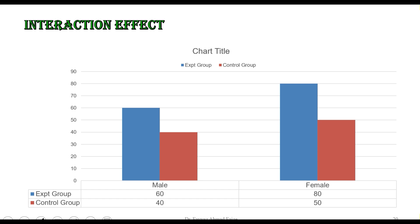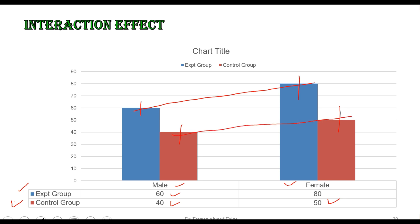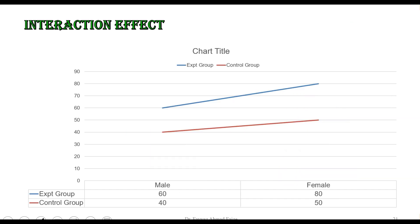Now let's look at an example with two factors: gender (male and female) and group (experimental and control). The mean for males in the experimental group is 60, and in the control group is 40. We also have corresponding means for females. When we plot these as a bar graph and draw lines connecting the midpoints of the experimental group bars and the control group bars, the two lines appear parallel — and therefore there is no interaction.